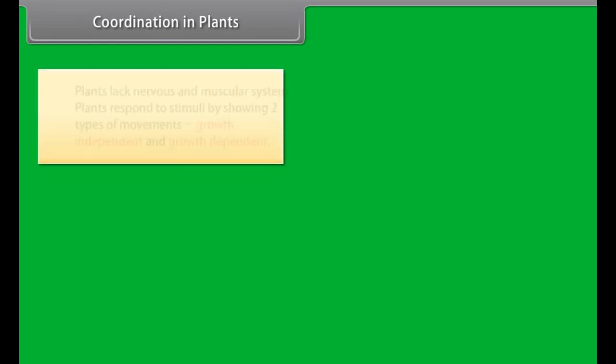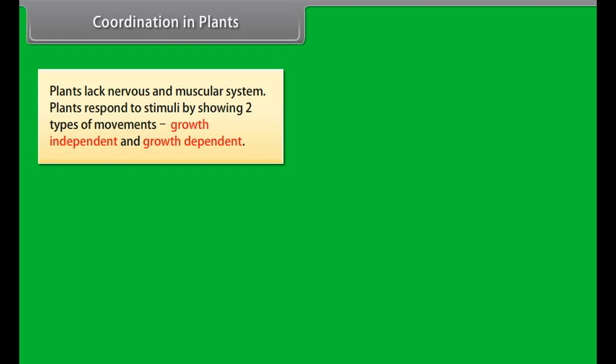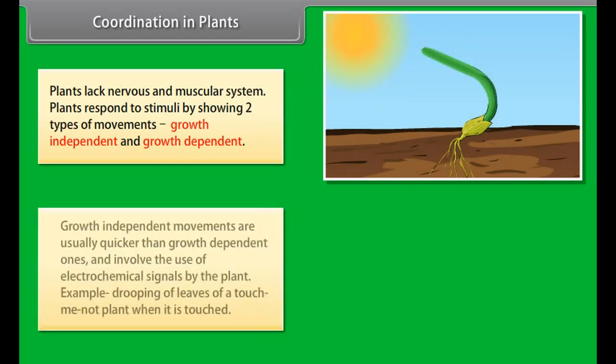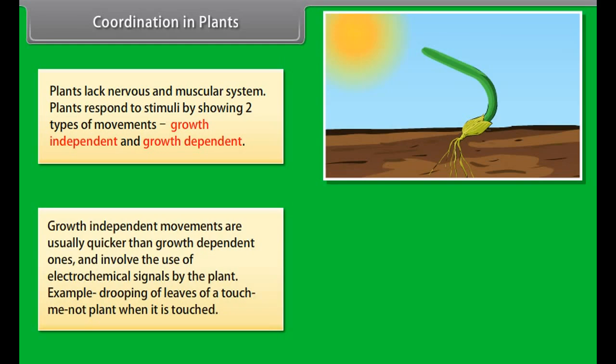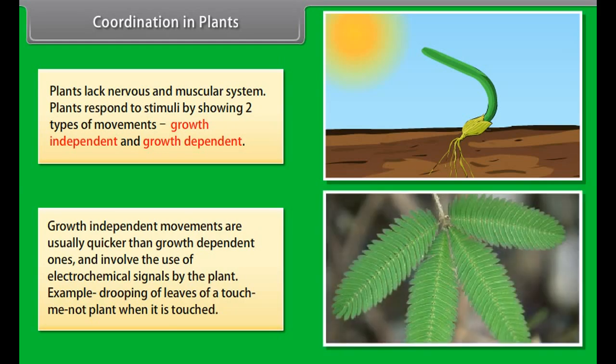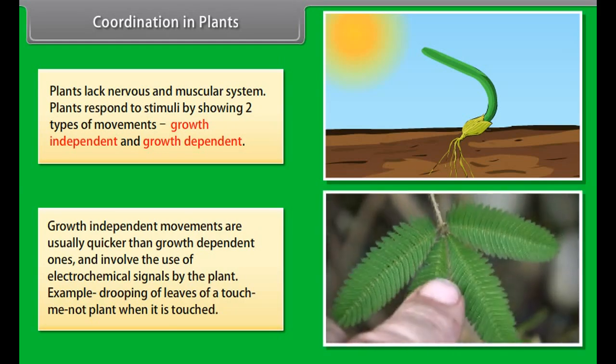Plants lack nervous and muscular systems. Plants respond to stimuli by showing two types of movements: growth independent and growth dependent. Growth independent movements are usually quicker than growth dependent ones and involve the use of electrochemical signals by the plant. Example: drooping of leaves of a touch-me-not plant when it is touched.